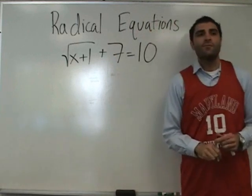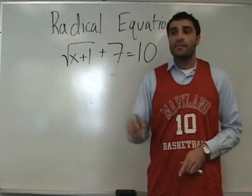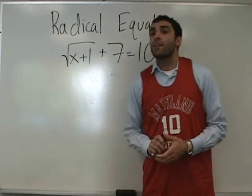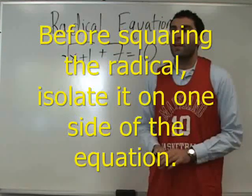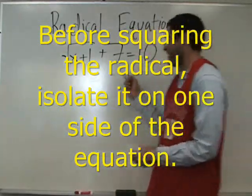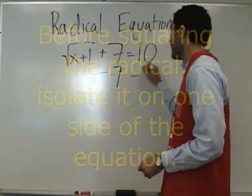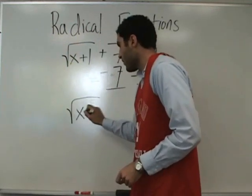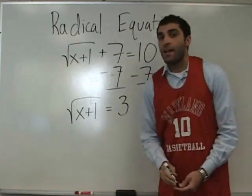Do we square both sides first, or do we simplify somehow? I think we should simplify by subtracting 7. Correct. We need to isolate the radical before we square. So minus 7 on both sides: the square root of X plus 1 equals 3. Now we square both sides.